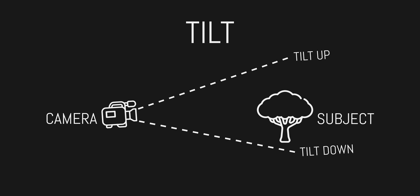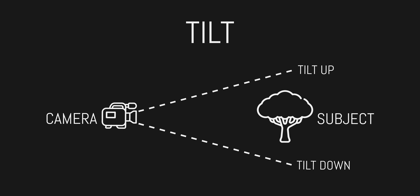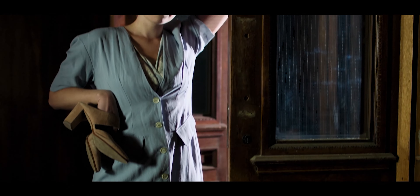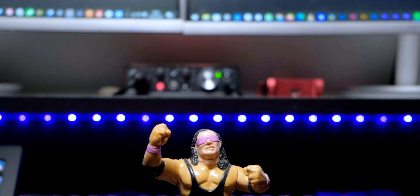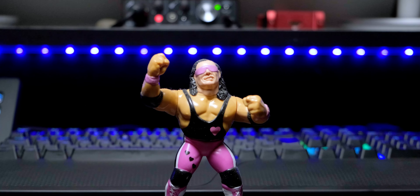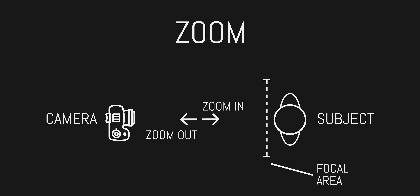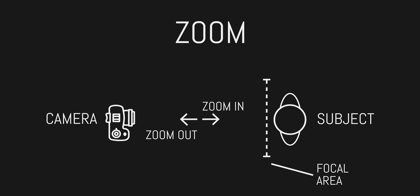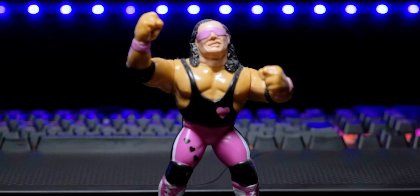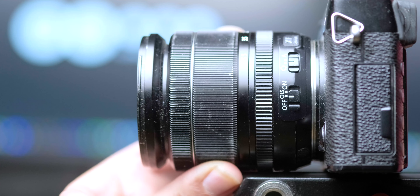Tilting is just like a pan but on the vertical axis, to direct the camera up or down. Now while the zoom shot is not technically a camera movement, it does give the impression of moving closer to or further away from the subject by changing the focal length of the lens.